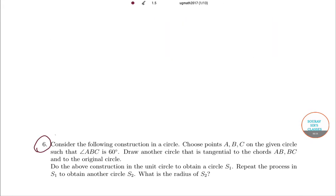So the question says: consider the following construction in a circle. Choose points A, B, C on the given circle such that angle ABC is 60 degrees. Draw another circle that is tangential to the chords AB, BC, and the original circle.